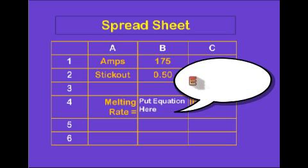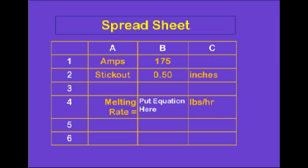It is also a good idea to put what the answer represents in the cell to the left and the units in the cell to the right. Then, when the calculation is made, it will read in this case, melting rate equals in the cells. The value in the cell will be what the equation calculates. Pounds per hour will be at the right.